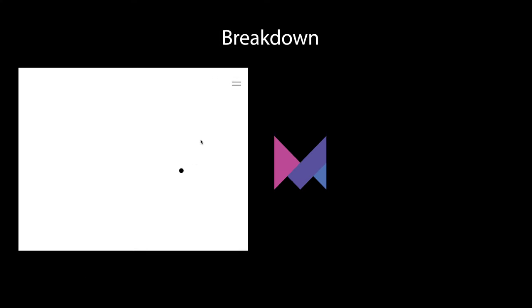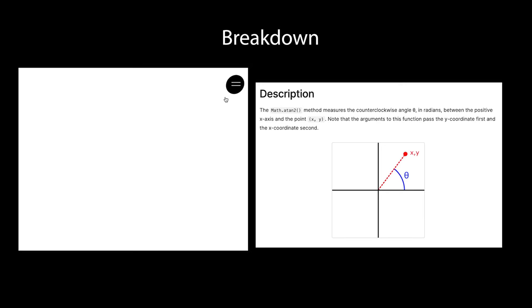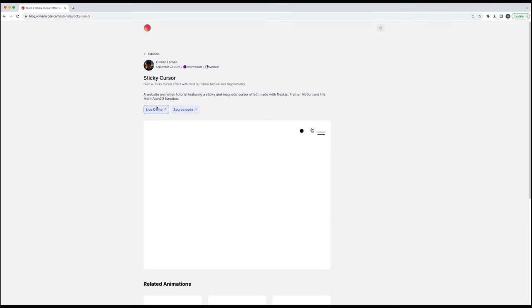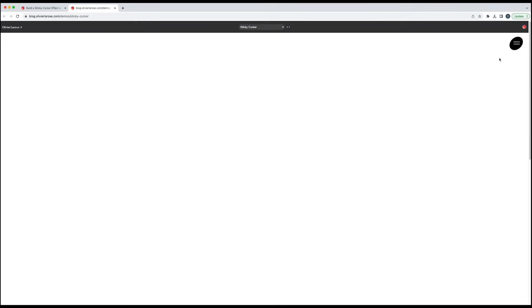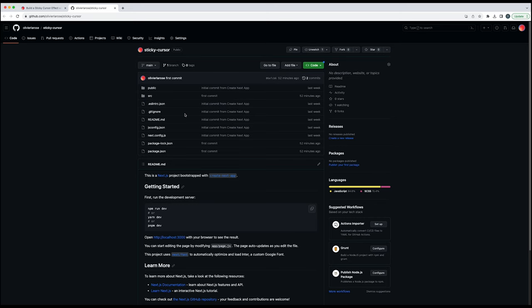What is up guys, welcome back. Today I want to show you how we can make this amazing sticky cursor effect that I've seen on a lot of award-winning websites. I'm going to recreate this using Framer Motion, Next.js, and some trigonometry. As always, the live demo and the source code are available in the description below.